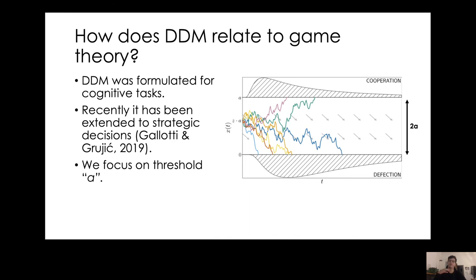How does DDM relate to game theory? DDM was originally formulated in neuroscience for cognitive tasks but has recently been extended to strategic decisions in game theory to study complex decisions between humans. Here we focus on the threshold parameter that measures cautiousness.